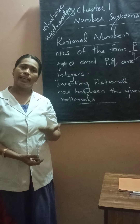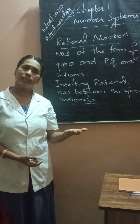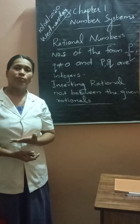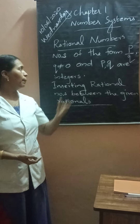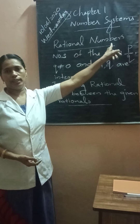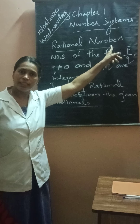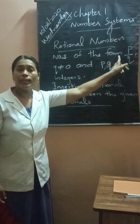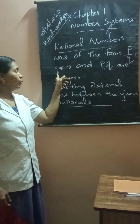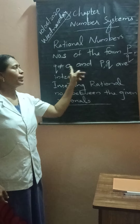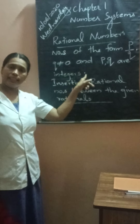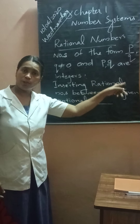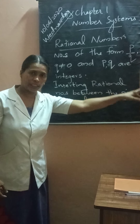Then we studied integers — negative numbers, 0, and positive numbers together give integers. And last year, we studied in our first lesson about rational numbers. What are rational numbers? Numbers of the form P by Q, where Q is not equal to 0, and P and Q are integers. Integers means P and Q can have negative values, 0, or positive values.